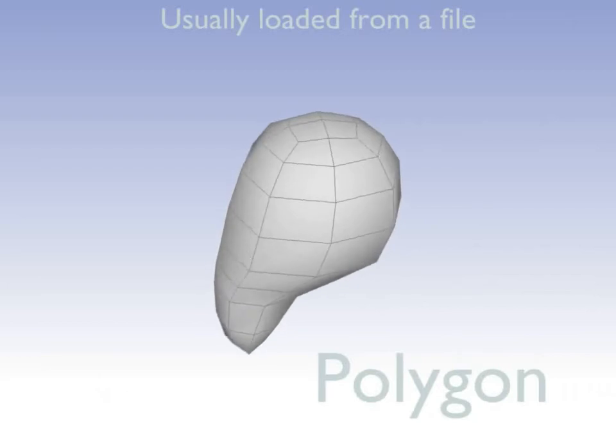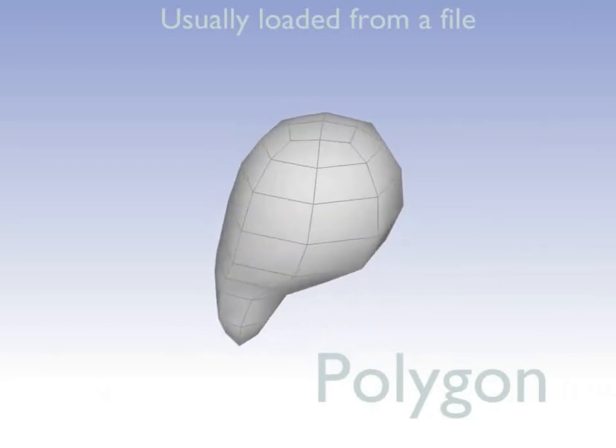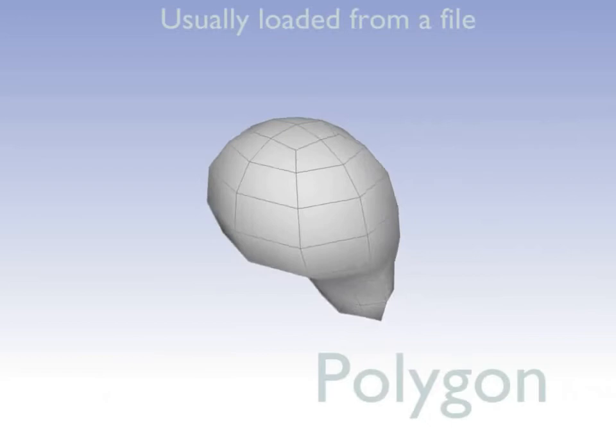Polygon. A polygon can be any shape and you'll usually make it in a 3D modeler like Blender. This is what you'll use for your maps.